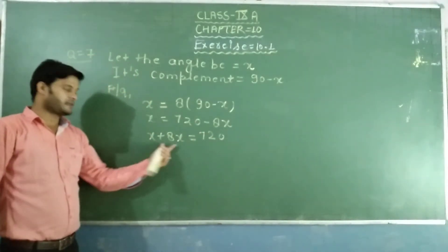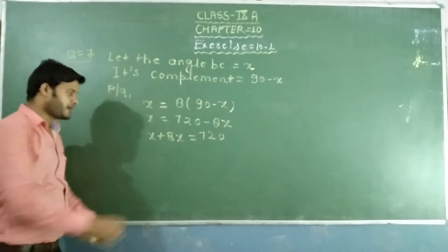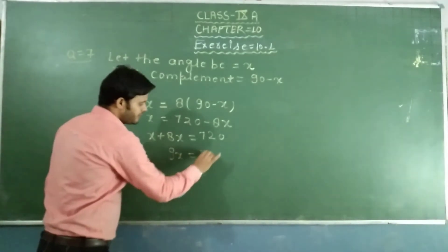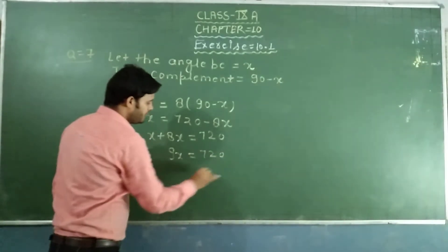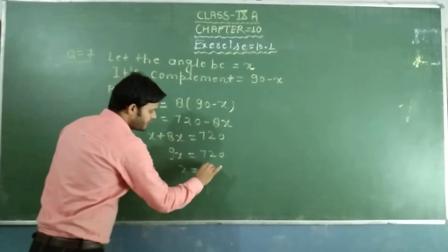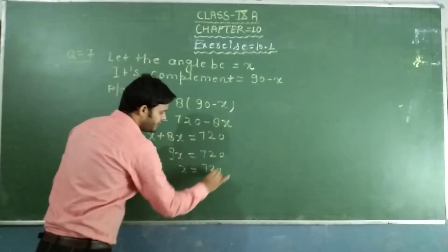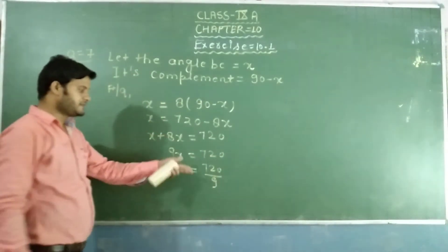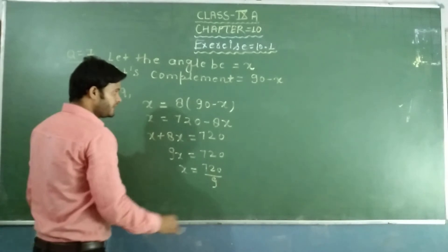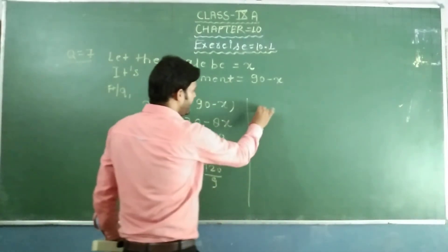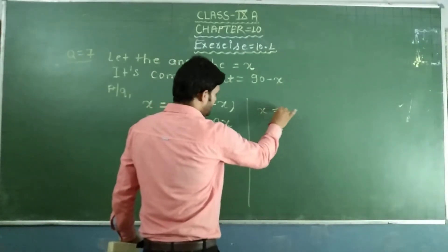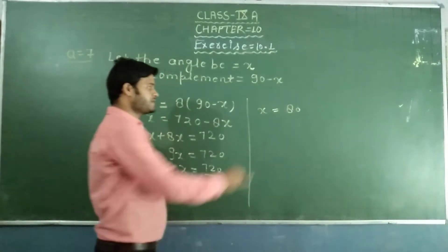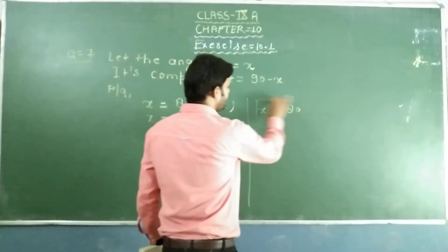8x and x. In our way, 9x equals 720. x equals 720 divided by 9, which gives x equals 80. So, x equals 80 degrees.